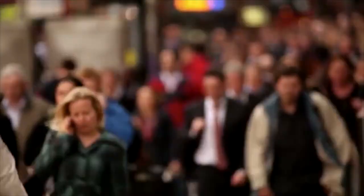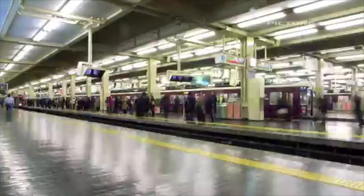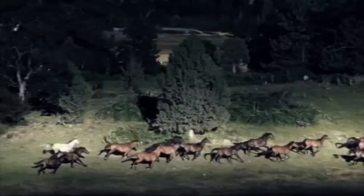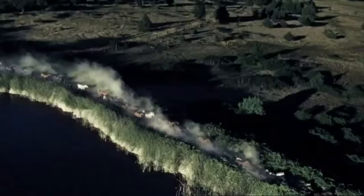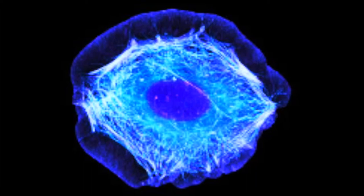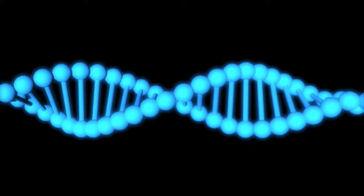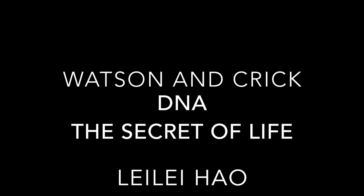Life on Earth is a wonder. What determines the lifespan of plants and animals? Why are we all unique? Why are some born with certain diseases, while others are born immune? From large mammals to tiny organisms, we are composed of millions of cells. Inside the nucleus of these cells lies the blueprint of life — one of the most fascinating things on Earth: Deoxyribonucleic acid, or DNA, the secret of life.